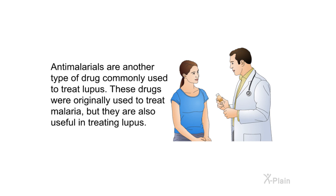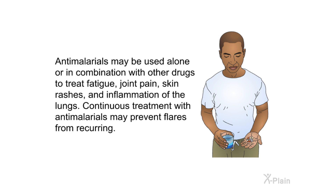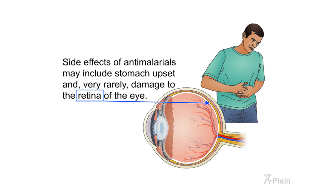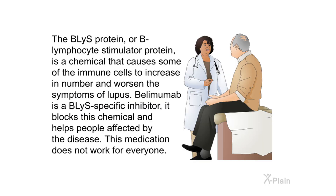Anti-malarials are another type of drug commonly used to treat lupus. These drugs were originally used to treat malaria but are also useful in treating lupus. Anti-malarials may be used alone or in combination with other drugs to treat fatigue, joint pain, skin rashes, and inflammation of the lungs. Continuous treatment with anti-malarials may prevent flares from recurring. Side effects may include stomach upset and, very rarely, damage to the retina of the eye.